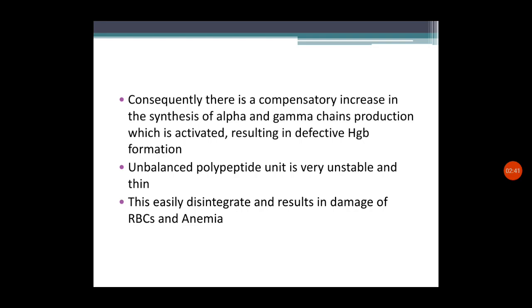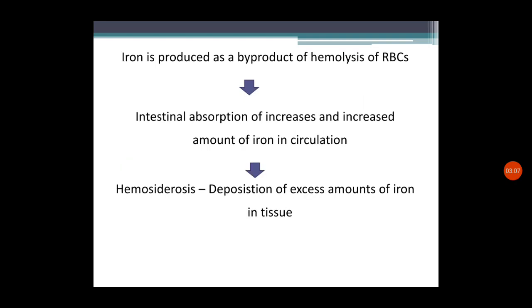Because the polypeptide unit is unstable and thin, it easily disintegrates and results in damage to RBCs — hemolysis — and anemia. This is the main problem in thalassemia. The abnormal synthesis of globin chains makes hemoglobin unstable and thin, causing hemolysis and ultimately resulting in anemia. This is the main pathophysiological change in thalassemia.